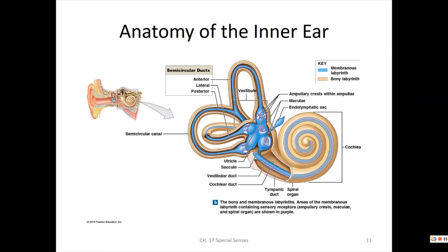The inner ear has the bony labyrinth in a creamy beige color surrounding the blue membranous labyrinth. The vestibular complex is composed of the vestibule and semicircular canals; the semicircular ducts are found inside the canals. The utricle and saccule are found inside the area called the vestibule, and the cochlear duct is found only in the cochlea.